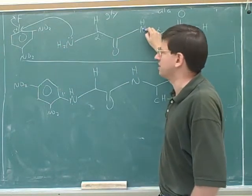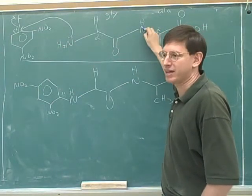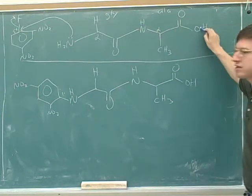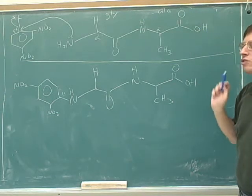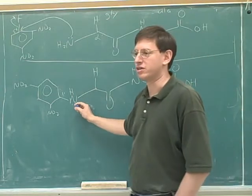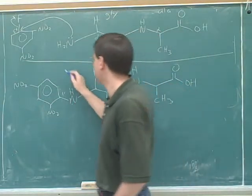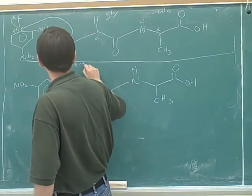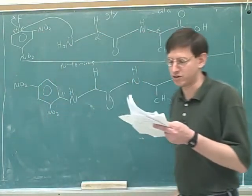Would we expect this nitrogen to attack the electrophilic carbon? Yes, because amine nitrogens are nucleophiles. Would we expect the amide nitrogen to attack Sanger's reagent? No, because it's an amide nitrogen. Would we expect the carboxy group to attack? No, because carboxy groups are not nucleophiles. So only one end will be labeled — the N-terminus. This is our trick for labeling the N-terminus; the N-terminus is the thing that gets stuck with the Sanger's reagent.